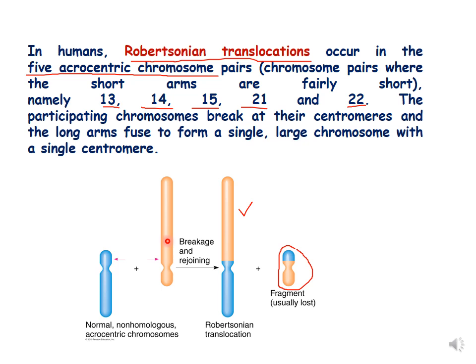One acrocentric chromosome has one arm very long and the second arm very short. When translocation happens between these two non-homologous chromosomes, it results in two chromosomes: one very long and the other very small. This type of translocation between two acrocentric chromosomes is called Robertsonian translocation, and it usually happens between chromosomes 13 and 14, 14 and 15, or 15 and 21.